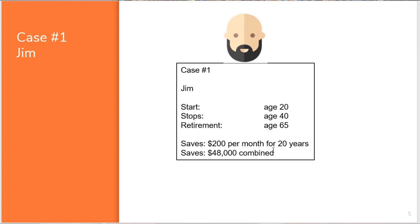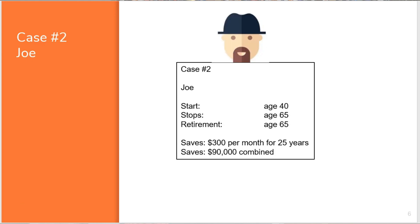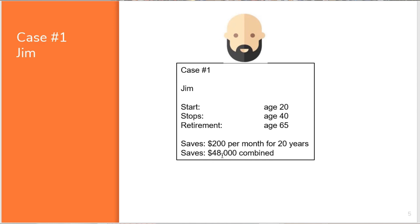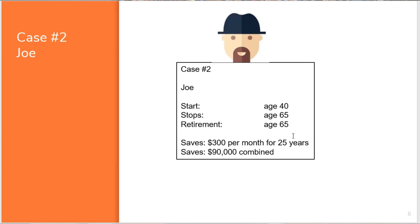Jim deposits $200 per month for 20 years — that's $48,000 combined. Remember that number. Now his brother Joe starts way later in life — at age 40 — but is also planning to retire at 65, so he saves for 25 years. Joe puts aside $300 per month for 25 years, which is $90,000 combined. That's almost double what Jim contributed — Jim put aside $48,000 over 20 years, and Joe put aside $90,000.